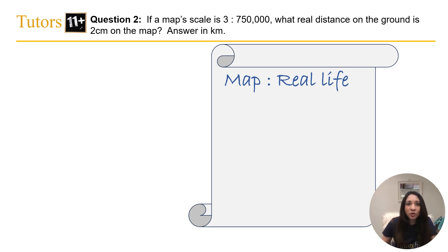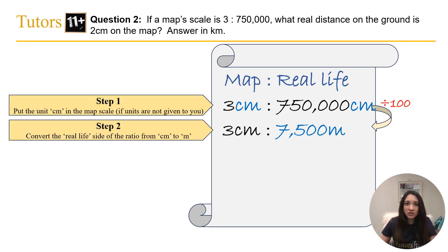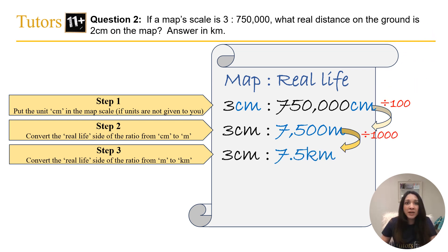As before, step 1 is to put in the unit centimeters into our map scale. Step 2, convert the real life side of the ratio from centimeters to meters by dividing by 100. Step 3, convert meters to kilometers by dividing by 1000. Now you know that 3cm on the map is 7.5km on the ground.